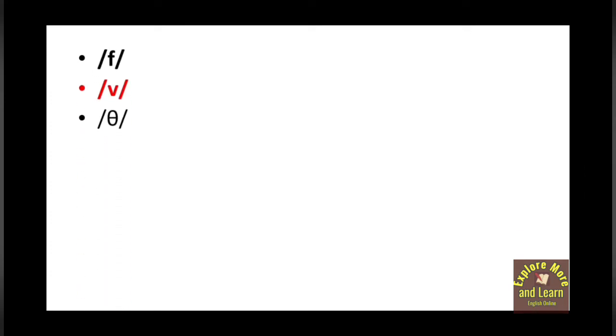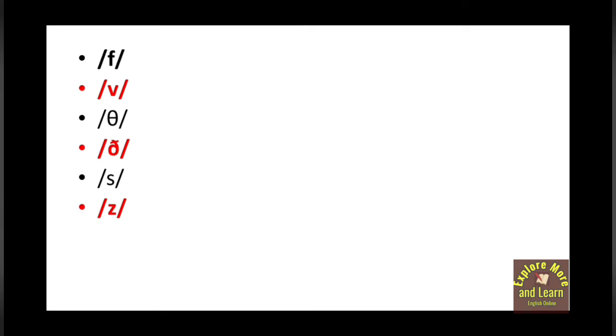So what are fricative sounds? Fricative sounds are /f/, /v/, /θ/ like in 'them', /ð/, /z/ like in 'zip', /ʃ/ like in 'sheep', and /ʒ/ like in 'pleasure'. These are the fricative sounds.